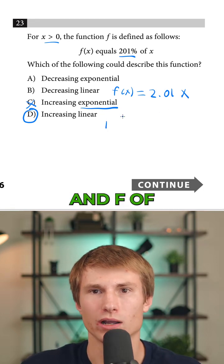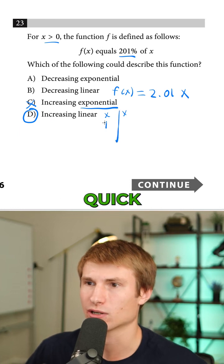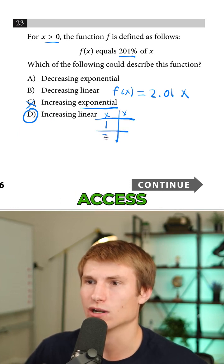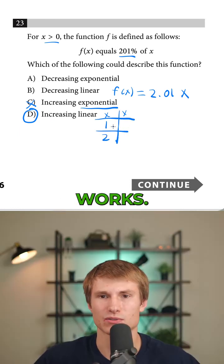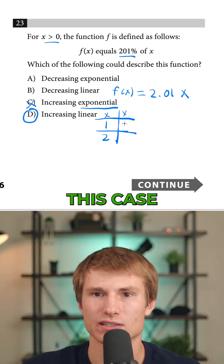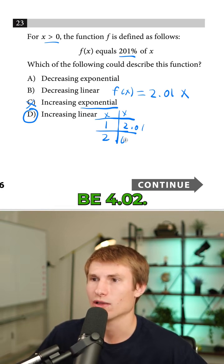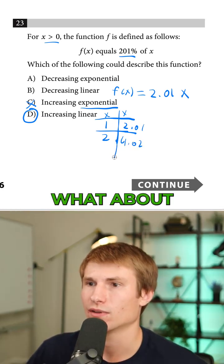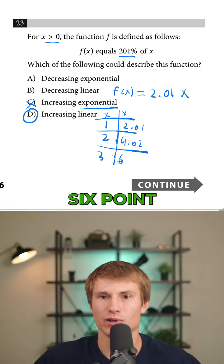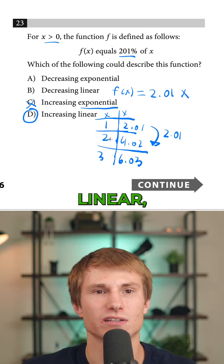Because think about it. If x is 1 and f of x is 2.01, and I'll just draw this as a table actually really quick. We'll do x is 1 and x is 2, and you'll be able to see how this works. So our y value when x is 1 in this case would be 2.01. What's our y value when x is 2 then? That would be 4.02. What about when it's 3? Then it'd be 6.03. And as you can see, each time we are increasing by 2.01. So this is linear.